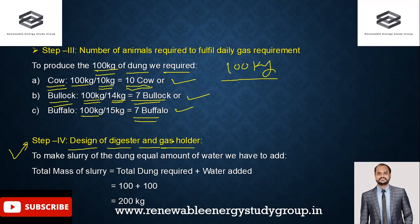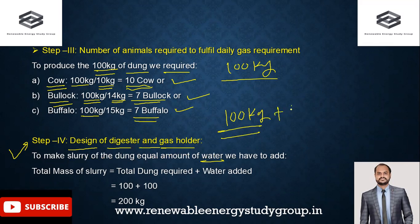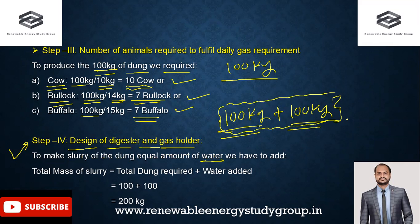Step 4 covers the design of the digester and gas holder system. The digester volume depends on the daily slurry input. To make slurry, equal amounts of water and dung are mixed — so 100 kg of dung plus 100 kg of water gives a total slurry mass of 200 kg per day.